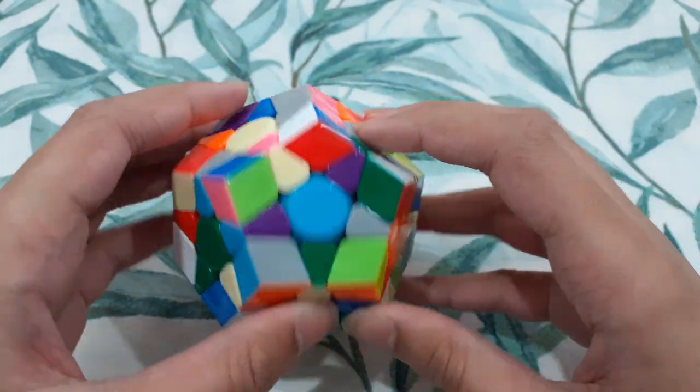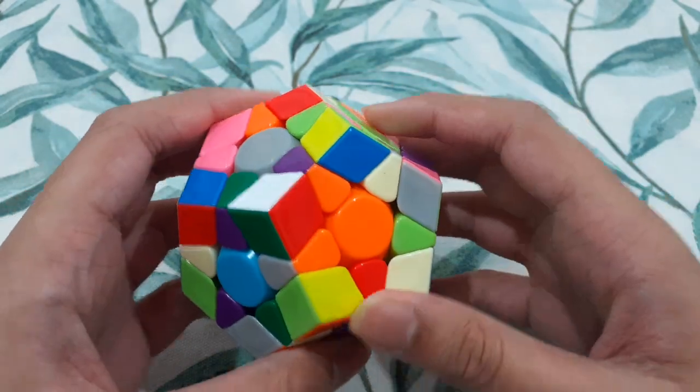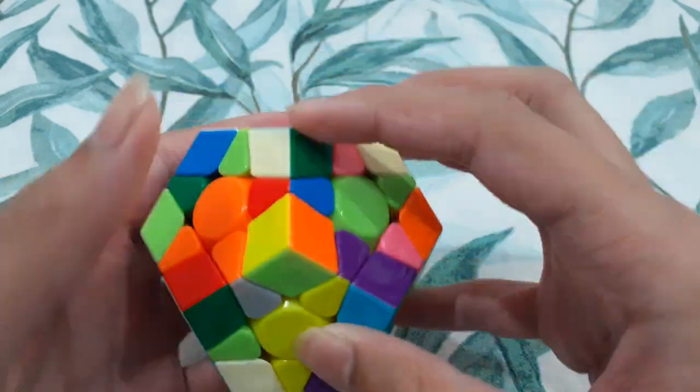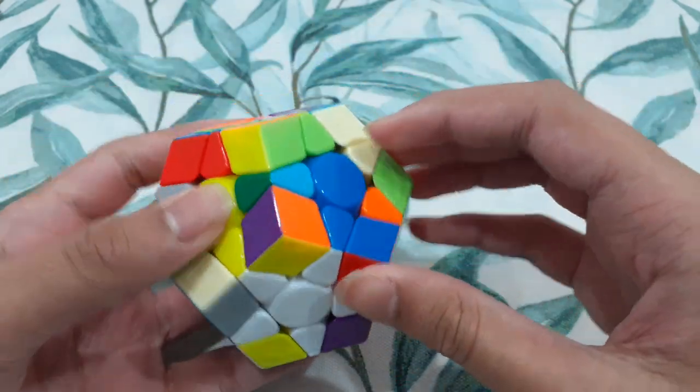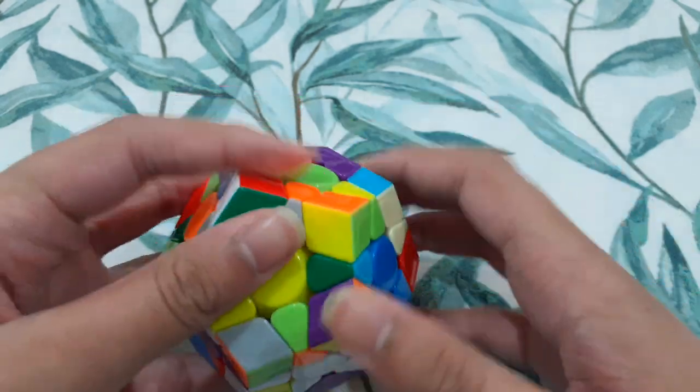And then like that for these two pieces, I'm going to do something like this and then insert into the bottom with just R2 F R2 prime F prime.